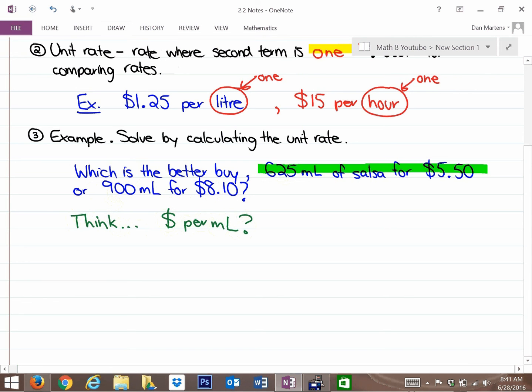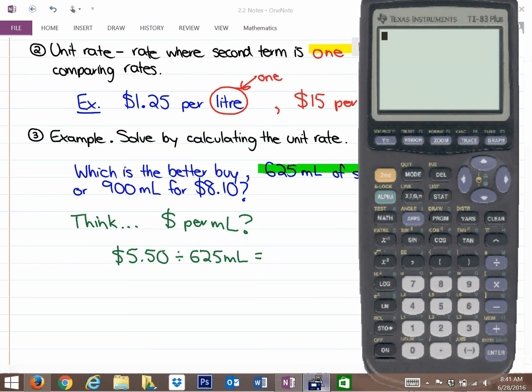So for salsa number 1, if I want to figure out the cost per milliliter, what I need to do is divide the cost by the number of milliliters. So I'm going to do $5.50 and divide that by 625 milliliters, and that will give me the cost per milliliter.